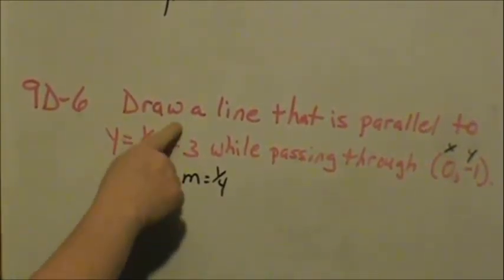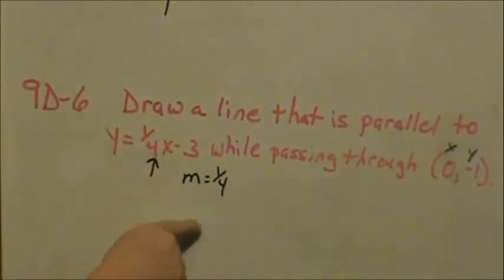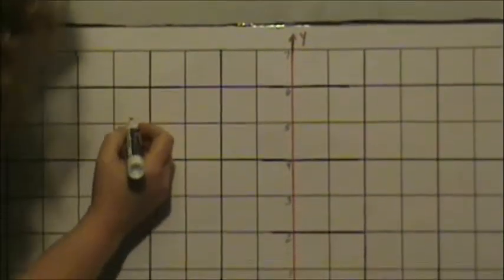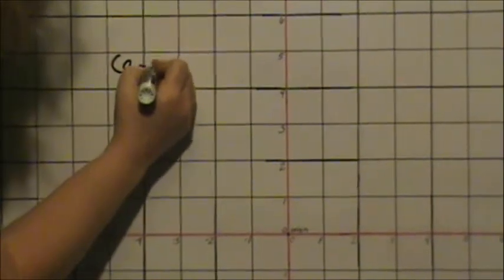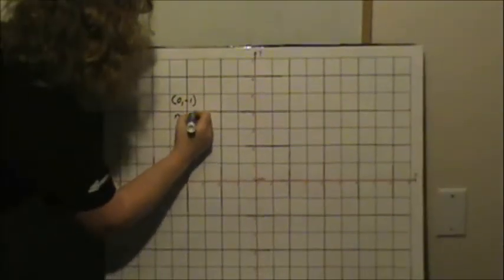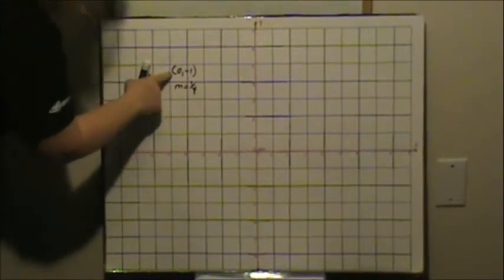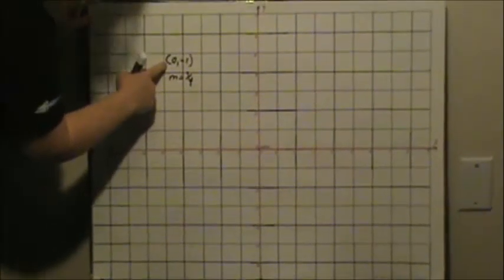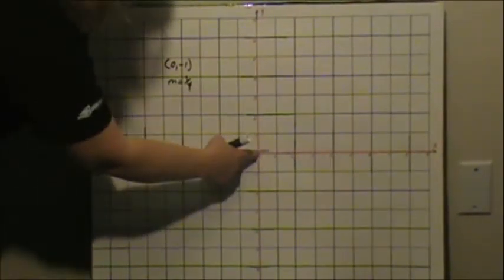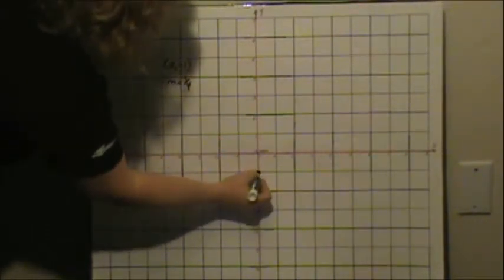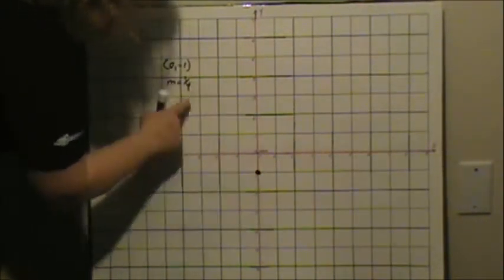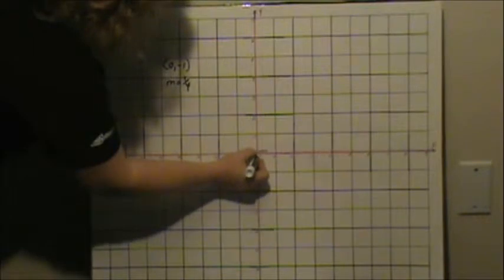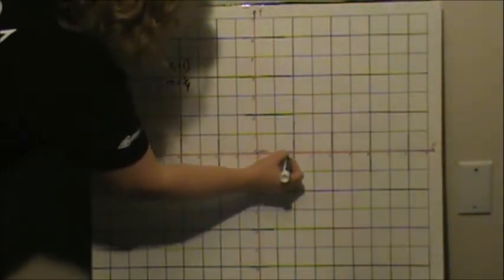To draw a line, they want us to graph it. So I can plot my point, 0 negative 1 on my graph. So I have a point of 0 negative 1 and a slope of 1 fourth. When you have a point and a slope, you plot your point first. 0 is your x value, I don't go anywhere in my x direction, and then I go down negative 1. So now I count my slope. Slope is rise over run. So I go up 1 and then over to the right, 1, 2, 3, 4.